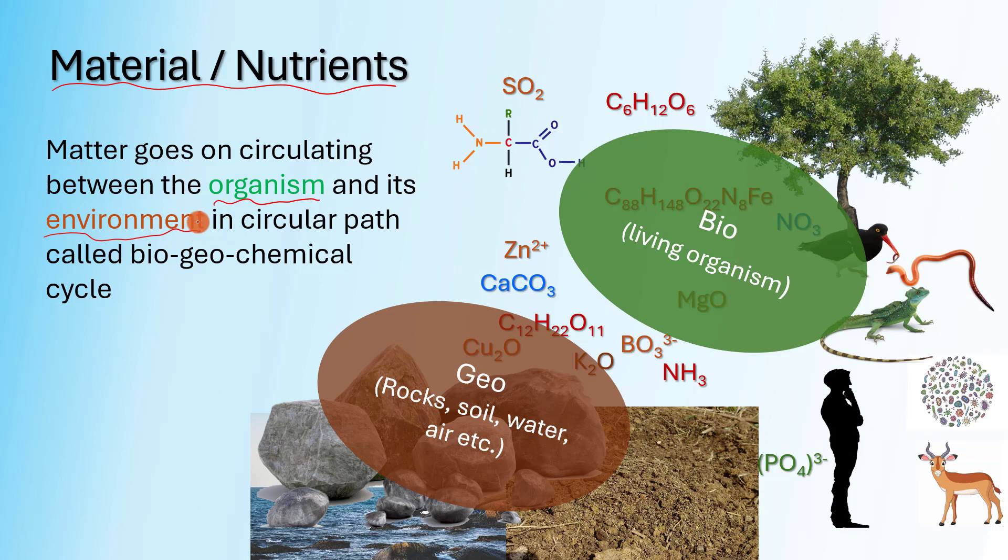Nutrients or matter are chemical elements, or a chemical compound. These chemicals keep circulating between the bio component and the geo component of the ecosystem. So, the cycle is also known as the biogeochemical cycle.